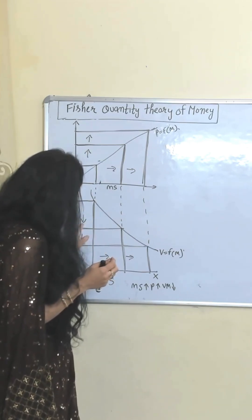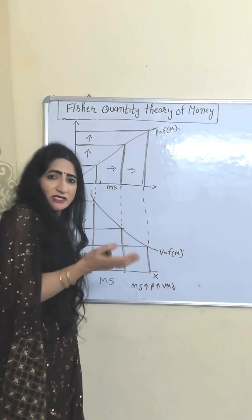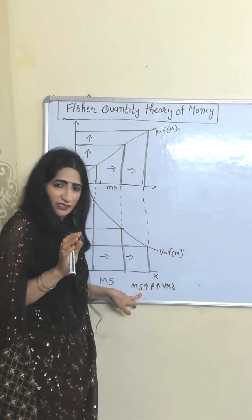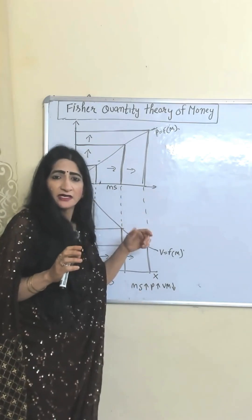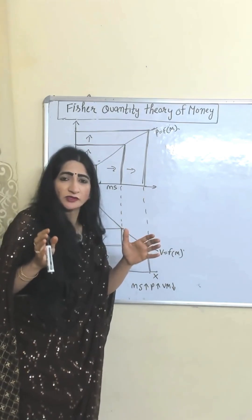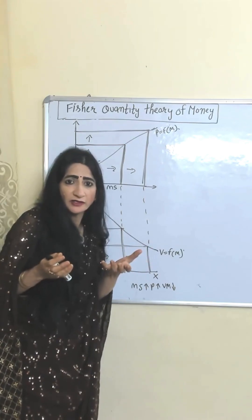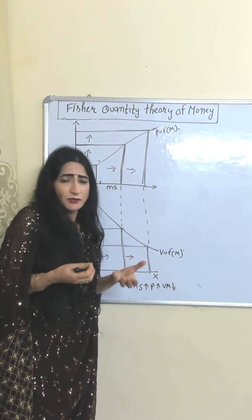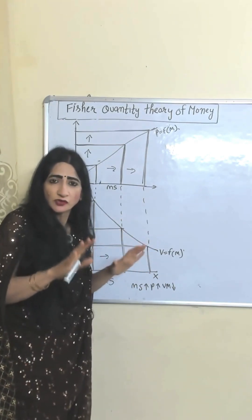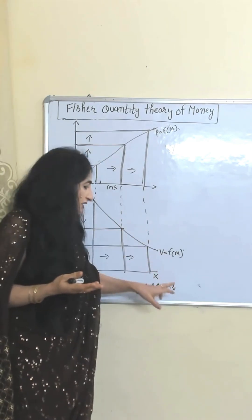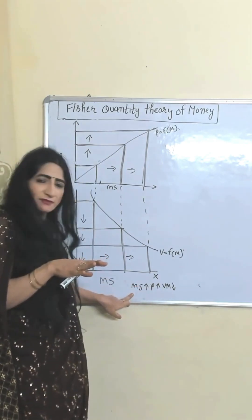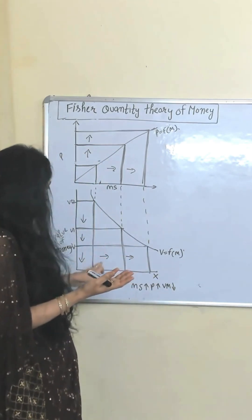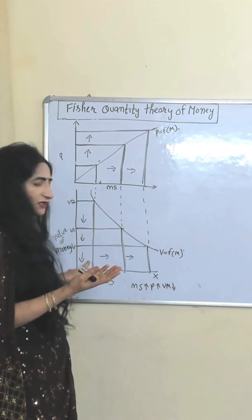But as money supply increases, the value of money falls. Why? Because as money supply increases, prices increase. Many years ago, 500 rupees had so much value — we could buy so many things with 500 rupees. But now, with the same 500 rupees, we can buy very few things. That's why we say nowadays 500 rupees don't have so much value. Due to inflation, the value of money falls. Increase in money supply leads to inflation, and inflation leads to a fall in the value of money. So we can say that an increase in money supply will lead to a reduction in the value of money.